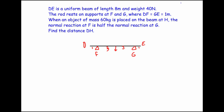Now I'm going to put my normal reactions on — a normal reaction at F and a normal reaction at G. It says the normal reaction at F is half the normal reaction at G. So if the normal reaction at G is R, the normal reaction at F is half R. You could also call them 2R and R — it's the same thing.